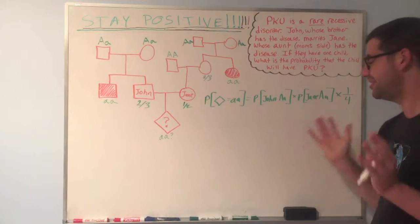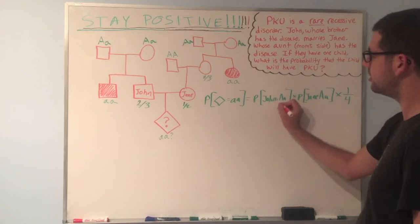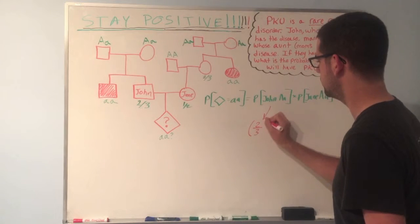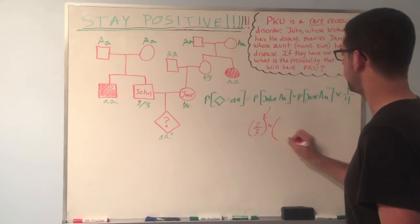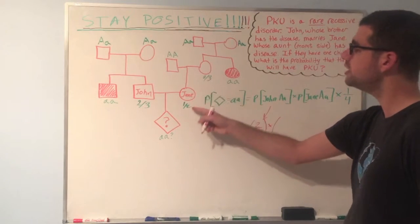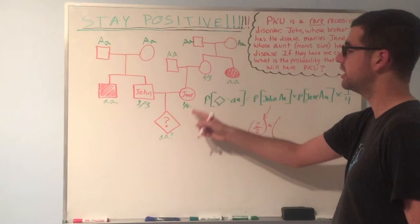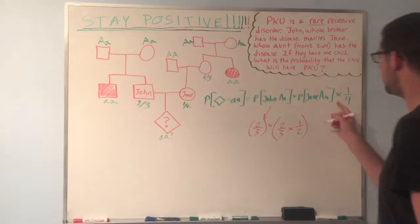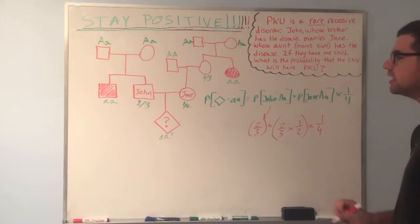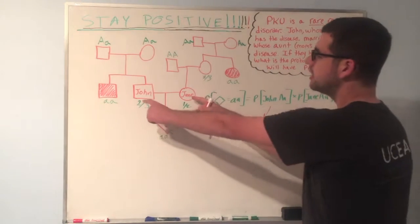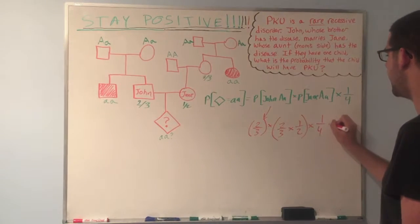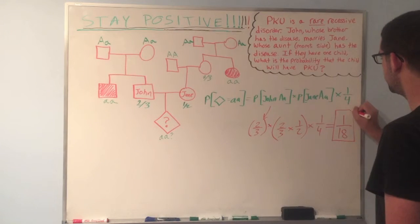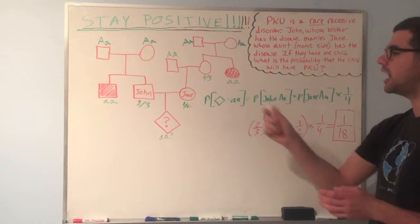All right, we're finally ready to solve this problem. So, we said that the probability of John being big A little a is two-thirds. We said that the probability of Jane being big A little a depends on two independent events, and according to the product rule, we can multiply them together. So, that's two-thirds times one-half. And finally, top it off with multiplying by one-fourth, which is the probability that the child would be little a little a, given that the two parents have heterozygous genotypes. And put that all together, simplify it, and you get an answer of one over eighteen. This means that there's a one over eighteen chance that the child has PKU.